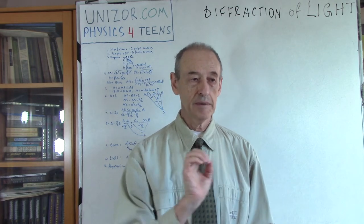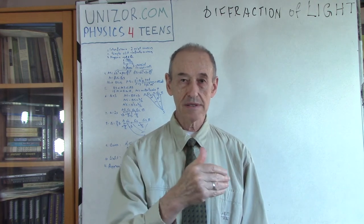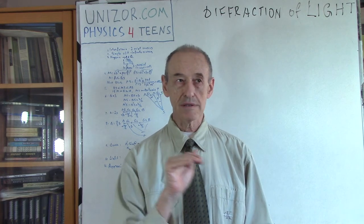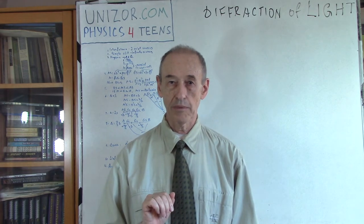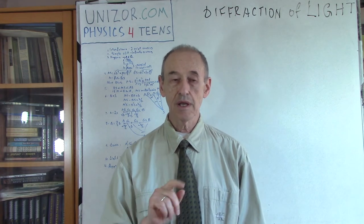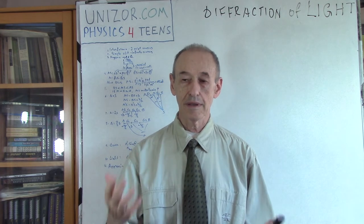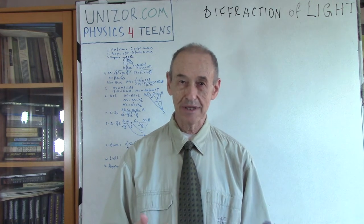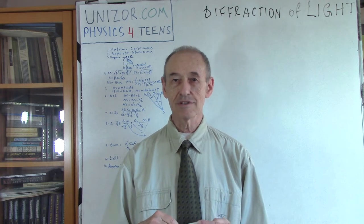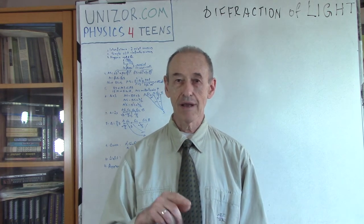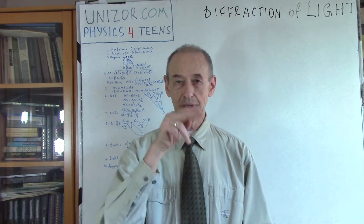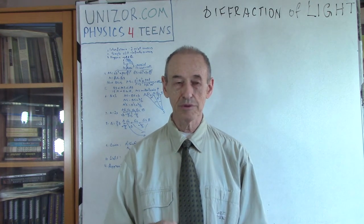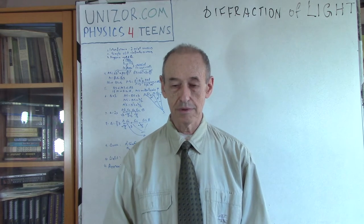Sound waves are longitudinal — they make denser regions as they go, and the molecules of air oscillate along the direction of propagation. In light, I can't say it mechanically because it's an electromagnetic field, but the oscillations of the electrical and magnetic components are across — the light goes one way, but the electromagnetic field oscillates perpendicularly to the direction of propagation.